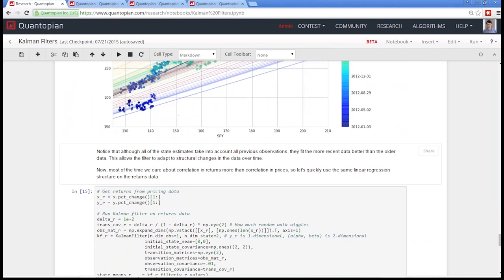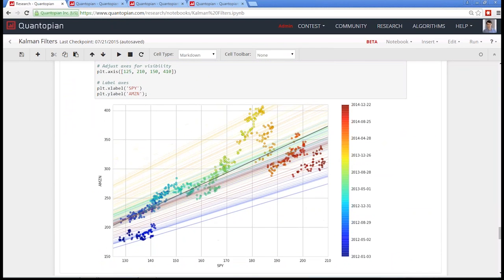But, yeah, so this is just an example of how, like, a nice visual explanation of things change over time. You want to be responsive to those changes, but it's a question of how do you know how responsive to be? A Kalman filter answers that question for you.